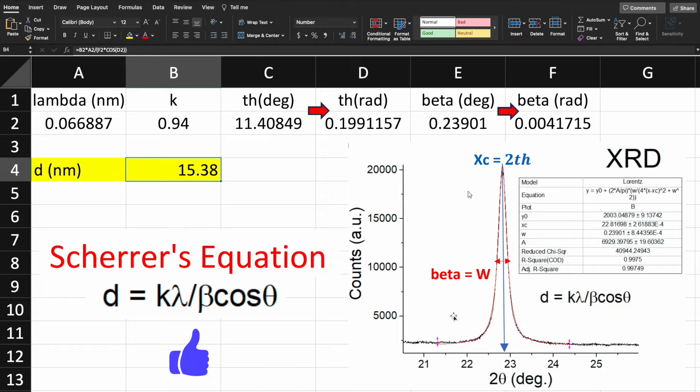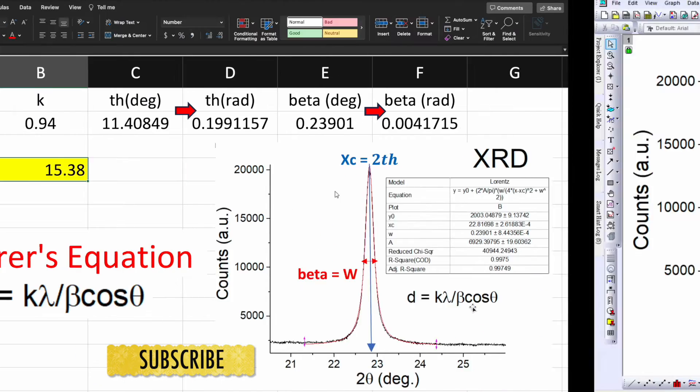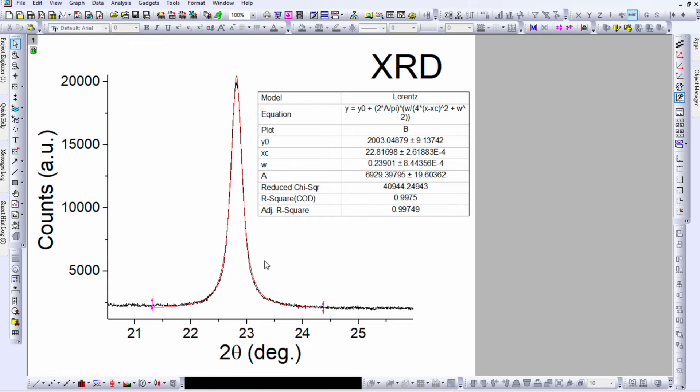First, get your XRD data and choose the most intense x-ray peak. In this case I have used Origin software to perform the peak fitting, where the black line shows the experimental data and the red line is the fitted curve.